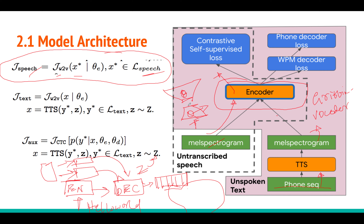A variational autoencoder is a probabilistic version of an autoencoder. You have an encoder and decoder with variational parameters phi and theta. You feed a spectrogram to the encoder, which predicts the mean and standard deviation of a Gaussian distribution. You sample from that distribution and feed it as input to the decoder, which predicts the original input. Training uses reconstruction loss plus KL divergence (ELBO loss), with a reparameterization trick to compute gradients.